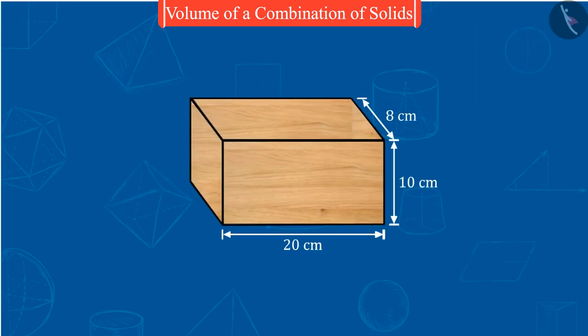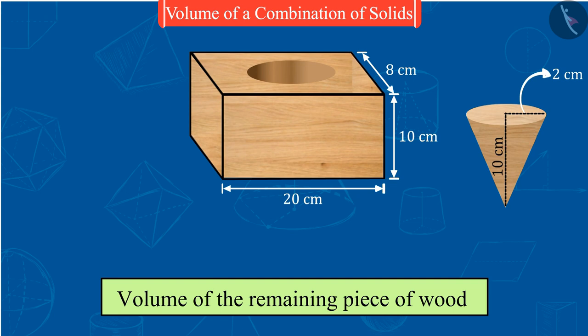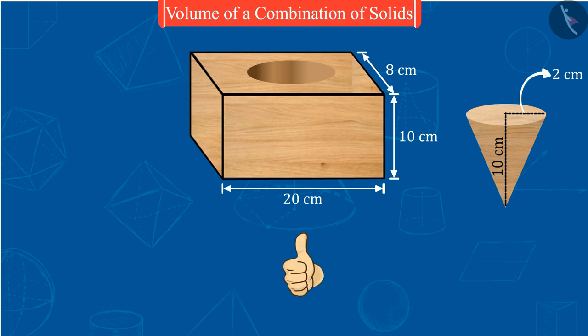Come, let's see one more situation of combination of solids. Suppose we have this piece of wood, from which we have to take out a conical piece of radius 2 centimeters and height 10 centimeters. Can you find out the volume of the remaining piece of wood in the same way? Absolutely correct!